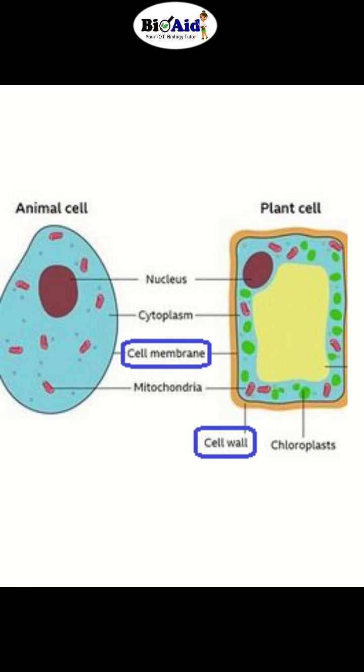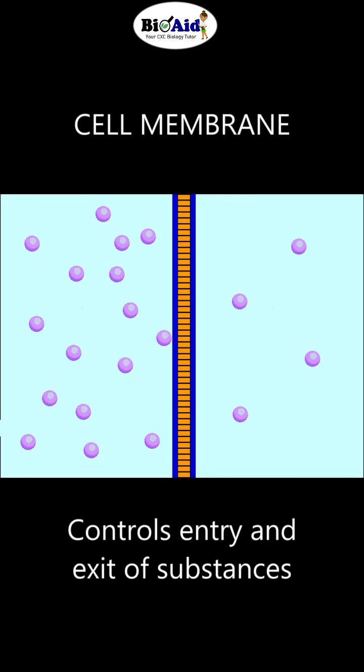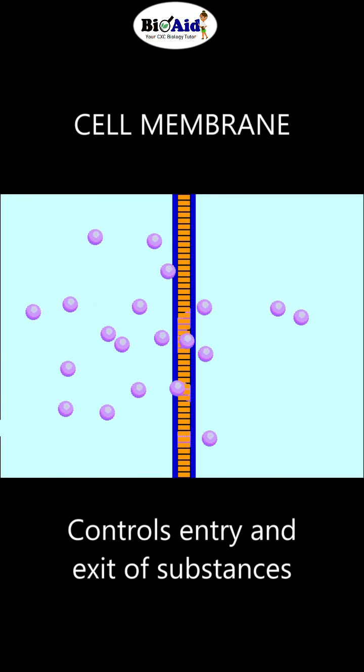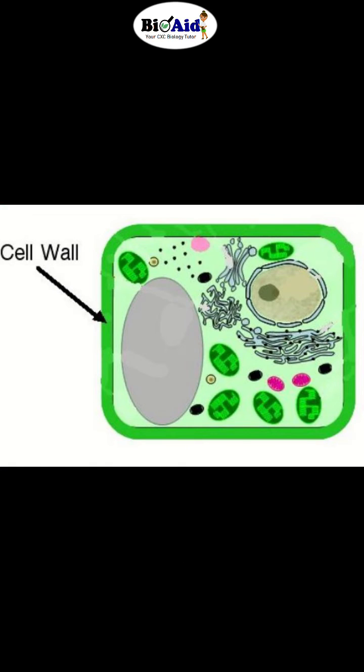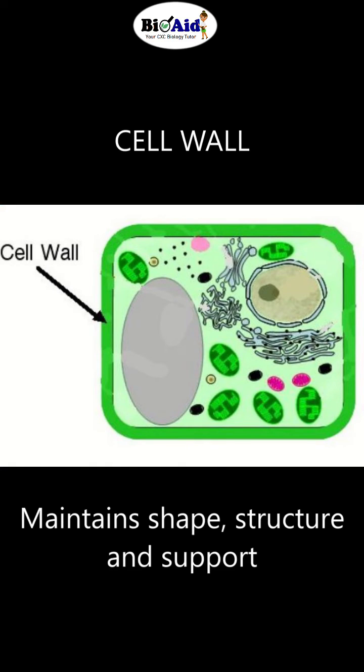So remember: the cell membrane controls what enters and leaves the cell, while the cell wall maintains structural support for the cell.